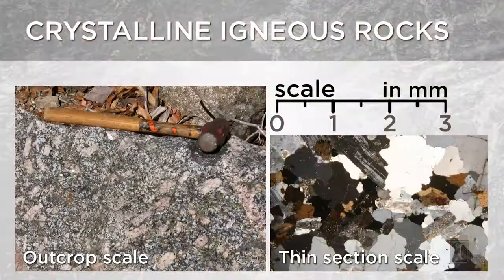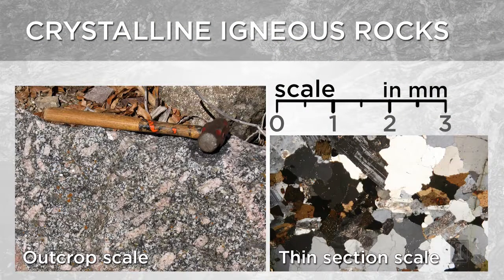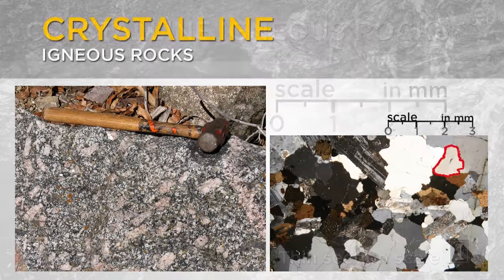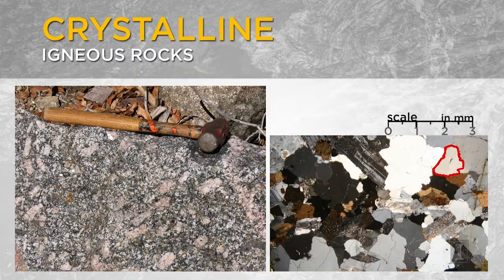If we look at this rock shown by the photograph on the left, and expand it using a microscope so we can see down to the size of individual grains, we can see lots of different mineral grains. And we can outline one of these grains, which represents, in this case, a single crystal of quartz.